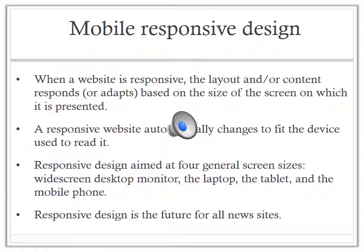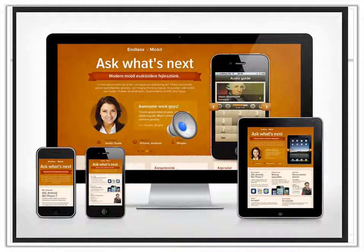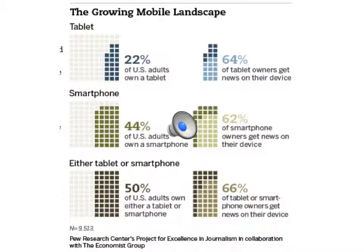A mobile responsive website automatically changes to fit the device used to read it. Responsive design is aimed at four general screen sizes: the widescreen desktop monitor, the laptop, the tablet, and the mobile phone. As the screen gets smaller, the content shifts and changes to the best display for each screen. About half of all US adults now have a mobile connection to the web through either their smartphones or tablets — significantly more than even just a year ago.